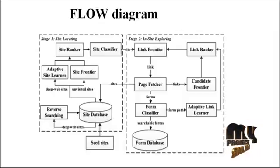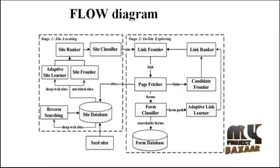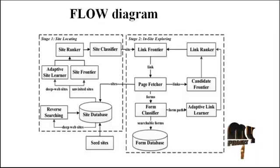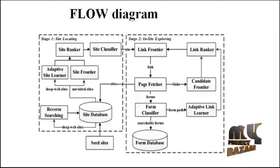Let's see the flow diagram of our project. In our flow diagram we have the overall concept of our project. First, the site has been seeded to the database. The web crawler has been used to see the sites and continuously fetches the URLs available on the internet. The URL has been seeded to the site databases.